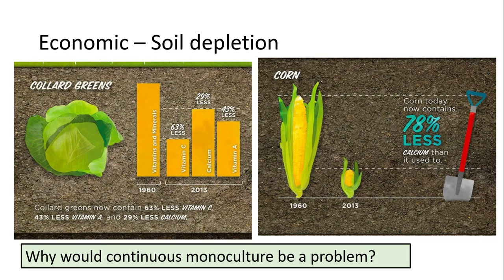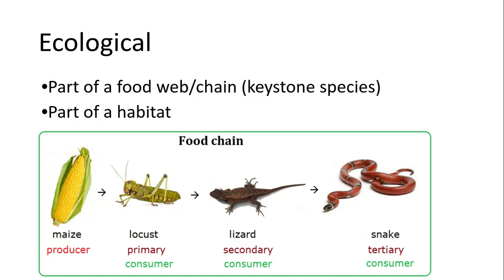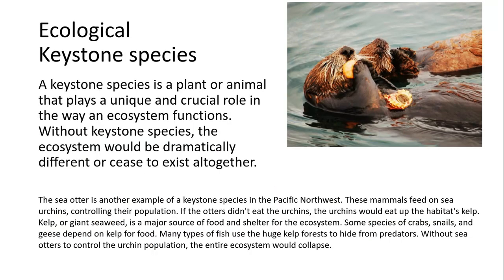We looked at monoculture in the previous lesson — if you want to have a look at the previous video please do so. Moving on to ecological reasons why we need to maintain biodiversity: that organism or area could be part of a food chain or web, and particularly keystone species that we need to look after. Also, that area could be a habitat for many different species. An example of a keystone species is the sea otter, which feeds on urchins. If the sea otter wasn't there, the urchins would eat up all the kelp and giant seaweed, which is a major source of food and shelter for other organisms in that ecosystem. So the sea otter acts as a keystone species, massively important for that particular ecosystem — these are massive ecological benefits for maintaining biodiversity.